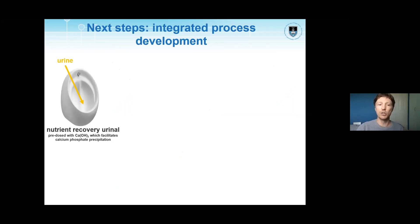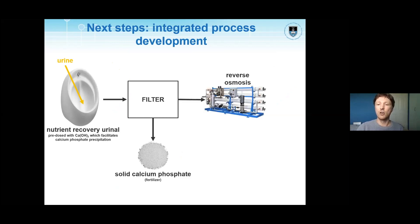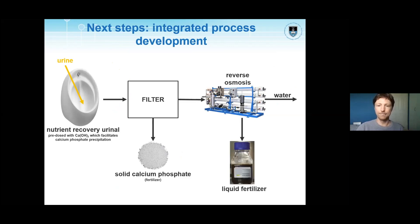The next steps are to integrate this process: we filter out the calcium phosphate from the urinal, then concentrate the remaining stream using reverse osmosis to produce water and a liquid fertilizer.